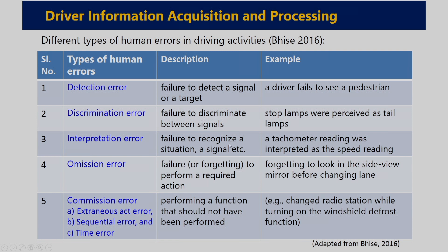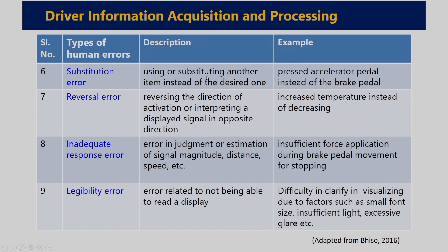Omission error — failure or forgetting to perform a required action; for example, forgetting to look into the side view mirror before changing the lane. Commission error — performing a function that should not have been performed; for example, changing the radio station while turning on the windshield defrost function. Substitution error — using or substituting another item instead of the desired one; for example, the driver by mistake presses the accelerator pedal instead of the brake pedal.